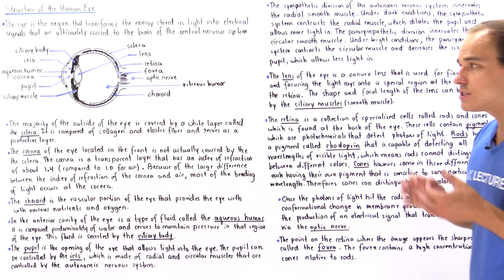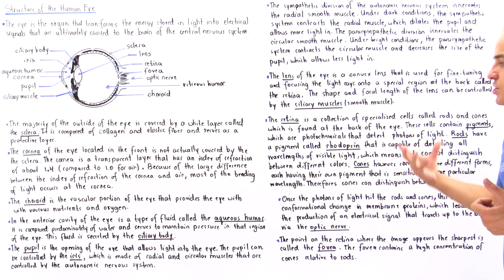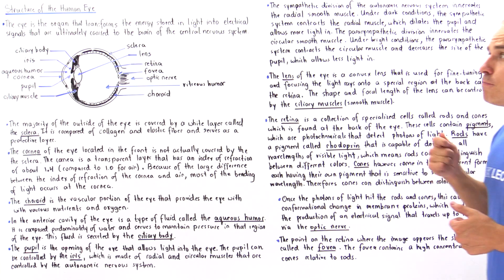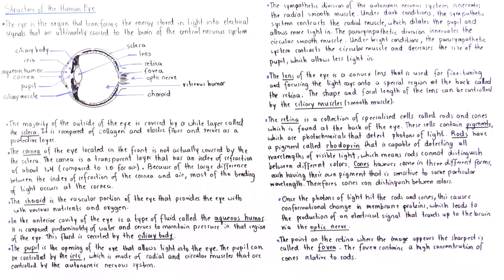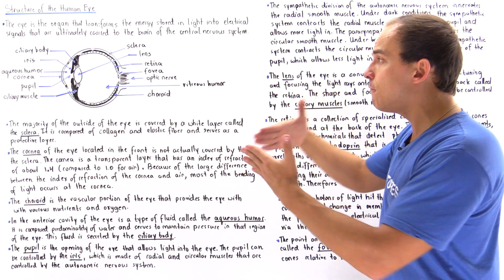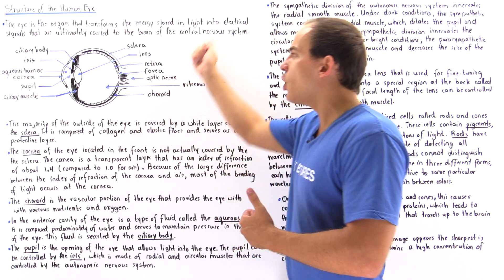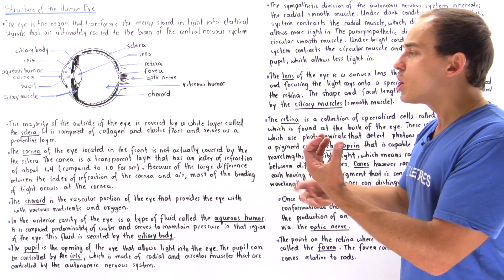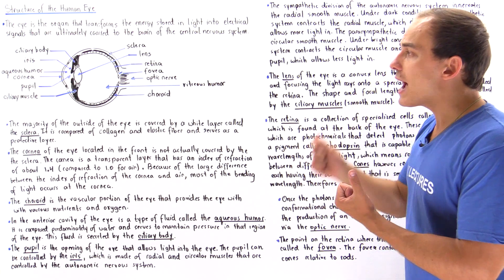There are two types of cells involved in the transmission of electrical signals. Once light hits the rods and cones and is transformed into an electrical signal, that signal ends up on a cell known as a bipolar cell. The bipolar cell then passes the signal to our retinal ganglion cells, whose axons converge and form our optic nerve, which travels all the way up to the brain. Inside the brain, those electrical signals are used to create an image that is right side up.